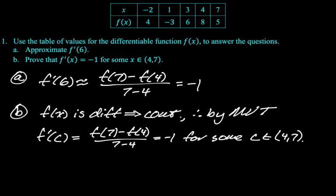It's really important to understand the distinction. For part a we approximated f'(6), we don't know what f'(6) is, we just know that a good guess would be negative one. In part b we use the mean value theorem to prove that there is definitely somewhere between four and seven where f' is equal to negative one. We don't know that it's at six, it could be at five, it could be like anywhere.